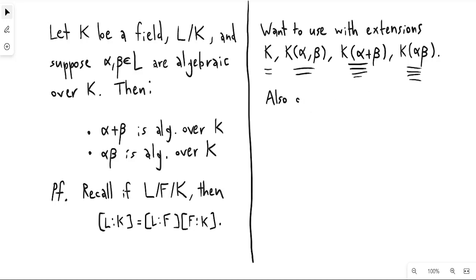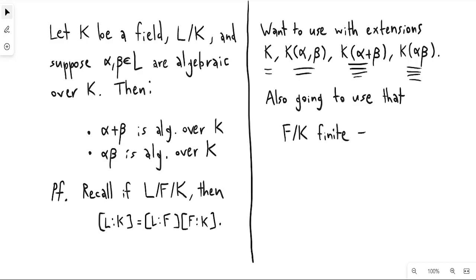We're also going to use the following property: if I have a finite extension f of k — meaning the degree is less than infinity — then this implies that f over k is algebraic. This is a well-known property of field extensions.